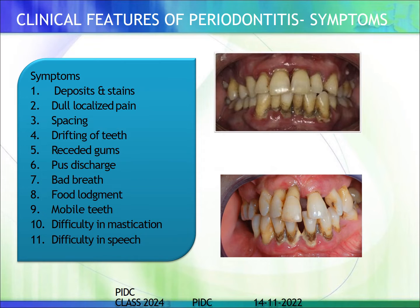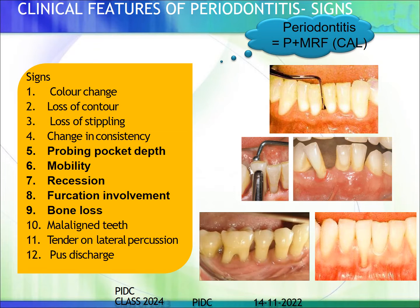What are the symptoms of periodontitis? The patient may come to you with deposits and stains, dull localized pain, spacing, drifting of teeth, pus discharge, bad breath, food lodgment, mobile teeth, difficulty in mastication, and difficulty in speech. If any of these conditions are present and you examine the mouth and find attachment loss, the patient has a periodontitis condition.